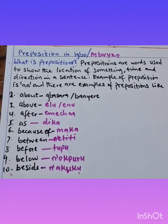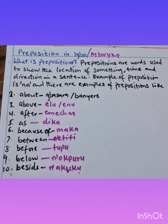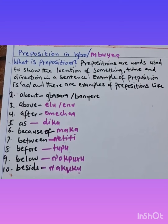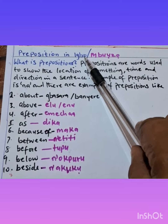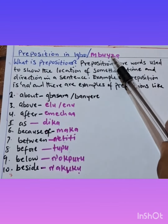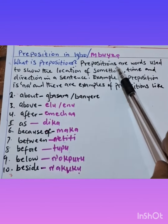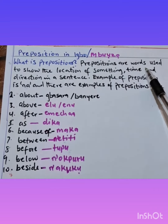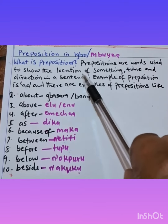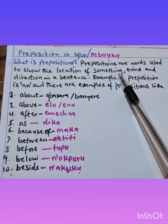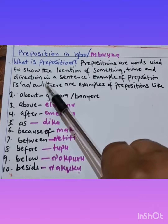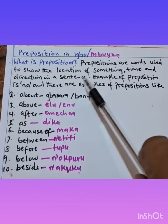We have Igbo language, still on parts of speech. Today's lesson we are going to look into prepositions in Igbo. What is a preposition? Prepositions are words used to show the location of something, time, and direction in a sentence.